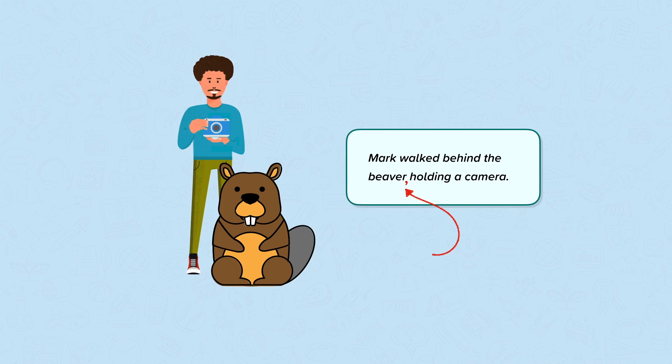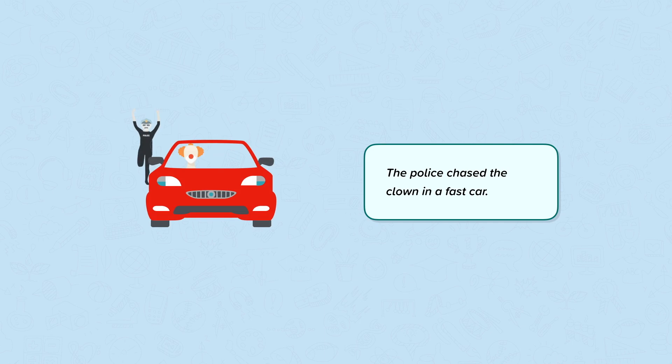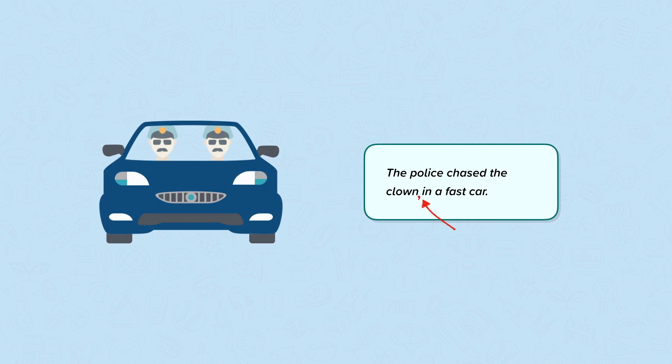And finally, the police chased the clown in a fast car. Here, the clown is in a fast car and the police are chasing. If we add a comma, the police chased the clown, in a fast car, it makes it clear that the police are the ones in a car.